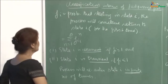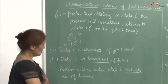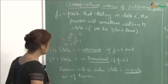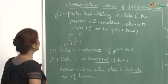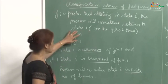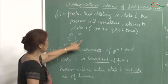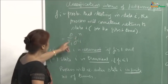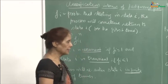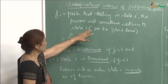Now I will give another classification of states in terms of first passage probabilities, which also provides an alternative way of determining whether a state is recurrent or transient. Define f_i as the probability that, starting in state i, the process will sometimes return to state i for the first time. Since f_ii(n) was the probability of returning to i from i for the first time in n steps, summing from n=1 to infinity gives the probability of the system ever returning to state i from i.